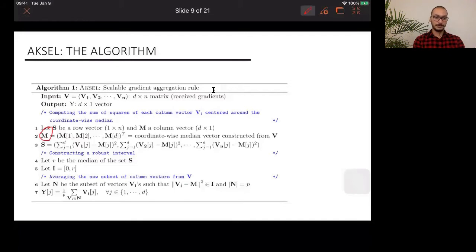And then we compute the squared norm of these central vectors in the vector s. And finally, we compute the median of these squared norms, let's call it r. And then we construct this interval from 0 to r, where r is the median of these squared norms. So now the filter is very simple. We only select the vectors inside this interval, only vectors that satisfy this condition, and we average them. And this is our output.